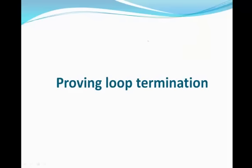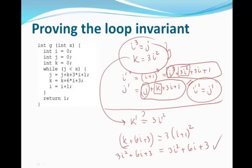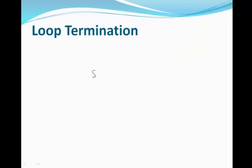The other problem we have is proving loop termination. In this case, looking at the code, j is an increasing function and must eventually exceed x. Since j is always increasing by at least 1, k is always increasing by at least 3, and i is always increasing by at least 1. So we know that j will at some point go over x, and the loop will terminate at that point.